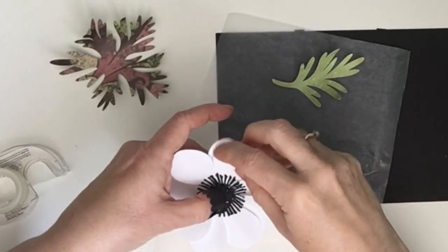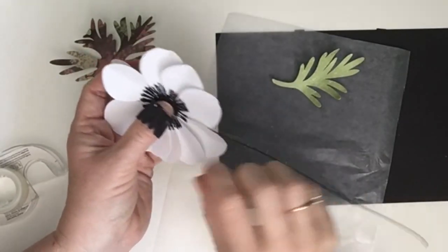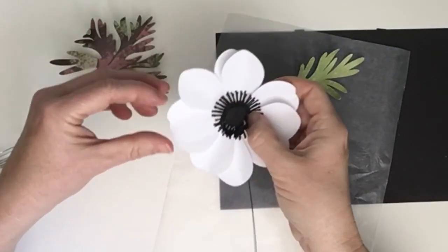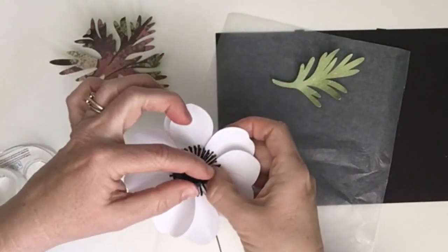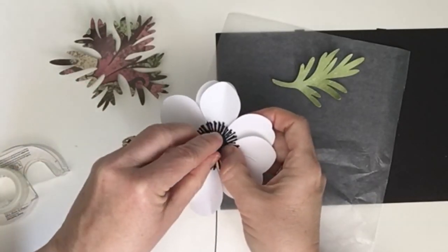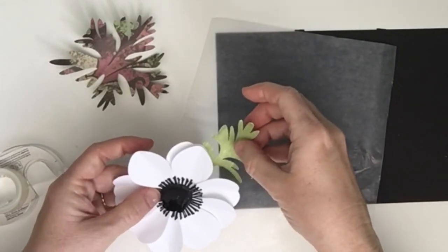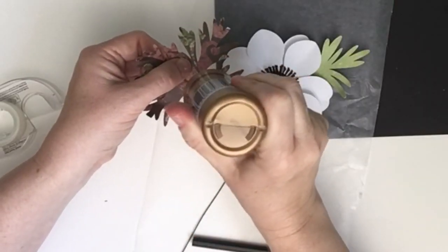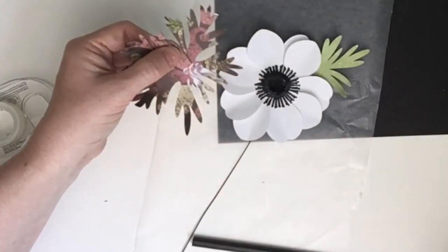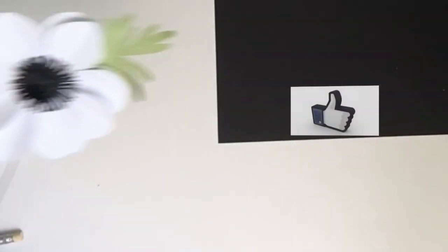Finally once everything was in place and the glue was dried I just kind of bent the leaves and the petals up a little bit and the stamens as well just to give it more of a realistic three-dimensional look. And there you have it, a set of three beautiful white anemone flowers that you can enjoy all year round. See you next time on Discovering the Art of Living.